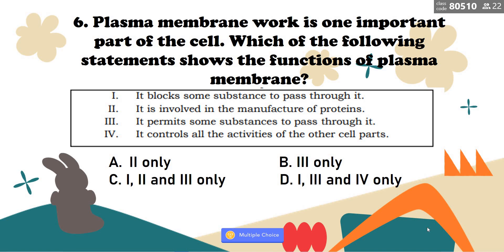Number 6: Plasma membrane is one important part of the cell. Which of the following statements shows the functions of plasma membrane? 1. It blocks some substances to pass through it. 2. It is involved in the manufacture of proteins. 3. It permits some substances to pass through it. 4. It controls all the activities of other cell parts. Is it A, two only; B, three only; C, one, two, and three only; or D, one, three, and four only? That is correct — it's only three: it permits some substances to pass through it. That is letter B.